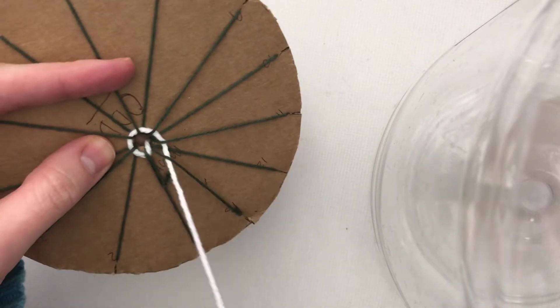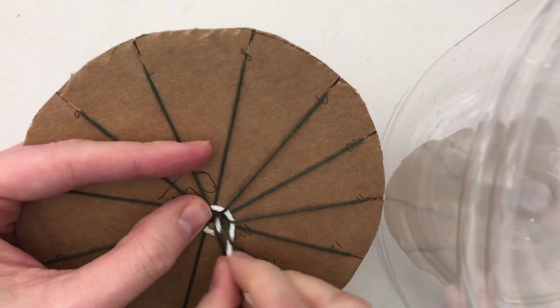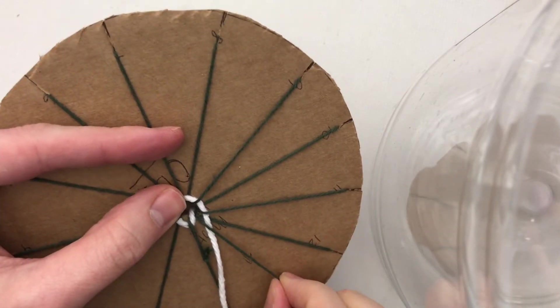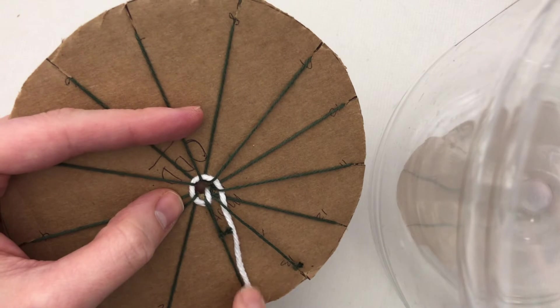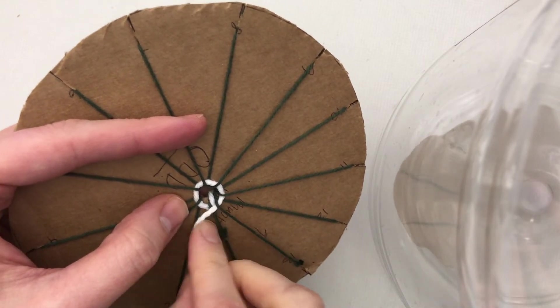And now I'm back at the beginning, and this is why it's so essential. Now you'll start to see why you need to have odd numbers. Because we started under number one, but now we're going to go over number one.